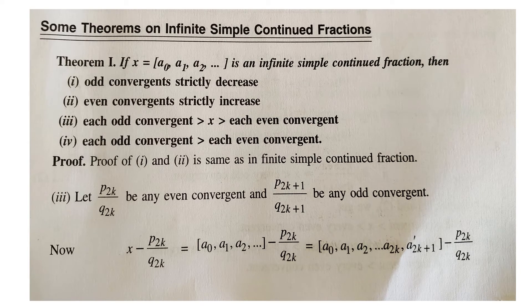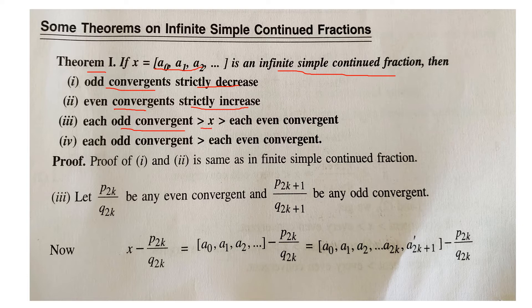Theorem 1: For any infinite simple continued fraction, odd convergents are always strictly decreasing, even convergents are strictly increasing, and each odd convergent is greater than each even convergent. The proofs of these results were already discussed in the previous lecture, so here I will skip those proofs.